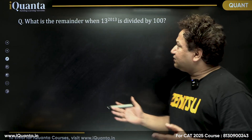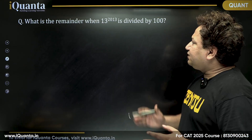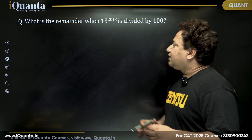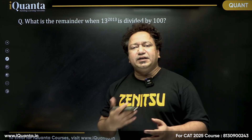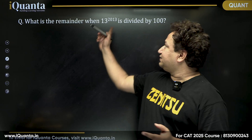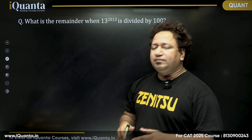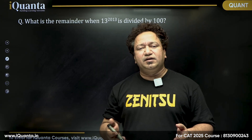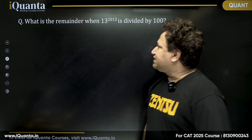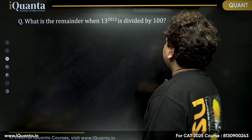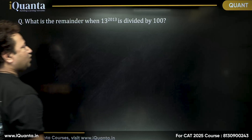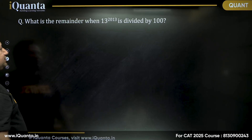The question asks: what is the remainder when 13 to the power 2013 is divided by 100? This question can also be rephrased in CAT as: what are the last two digits of this number? Because when you divide something by 100, the remainder you obtain is always the last two digits. That is commonsensical, so let's try and do that.